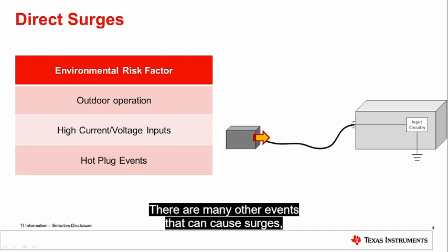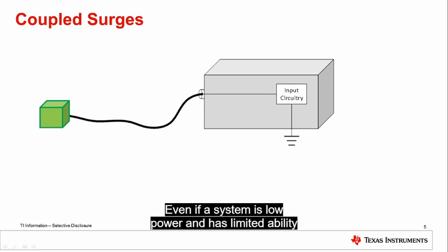There are many other events that can cause surges, but these tend to be the most common causes. Even if a system is low powered and has limited ability to internally produce a surge, it can easily see surges coupled inductively from nearby equipment.